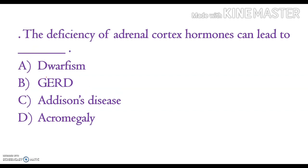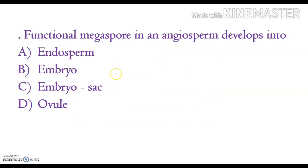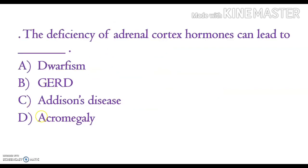The deficiency of adrenal cortex hormone can lead to: goitre, GERD (gastroesophageal reflux disease), Addison's disease, or acromegaly. GERD is a condition where acid from the stomach comes up into the esophagus, causing irritation. The correct answer is option C, Addison's disease.